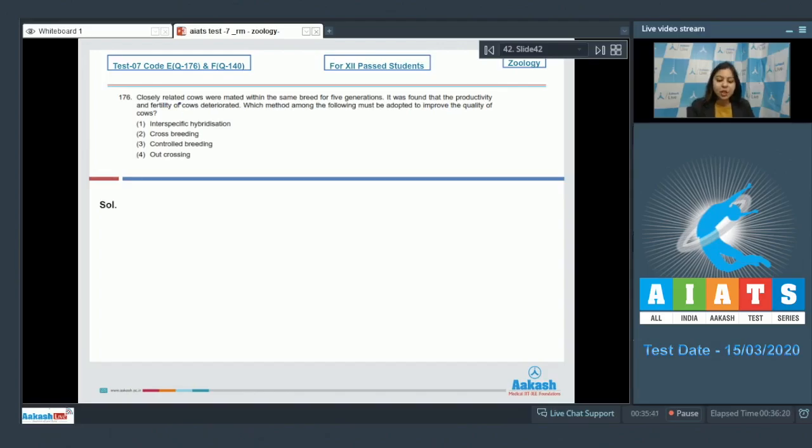Question number 176: Closely related cows were mated within the same breed for five generations. It was found that the productivity and fertility of cows deteriorated. Which method among the following must be adopted to improve the quality of cows? The phenomenon being discussed in the question is inbreeding depression, that is, the accumulation of recessive